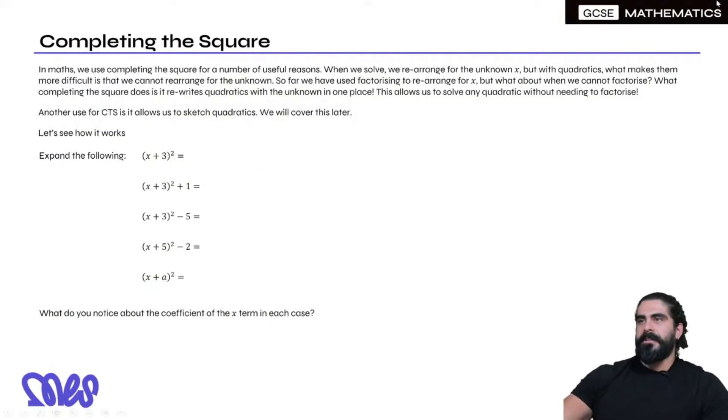What is completing the square? In maths we use completing the square for a number of useful reasons. When we solve we rearrange for the unknown x, but with quadratics what makes them more difficult is we cannot rearrange for the unknown because you have x squared plus x plus whatever. You can't just rearrange for x because x is in two places.